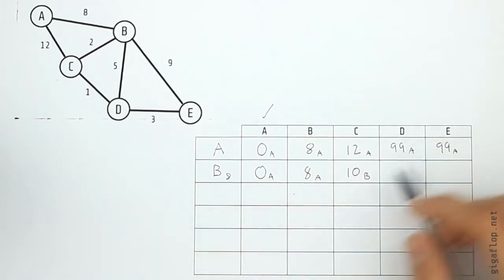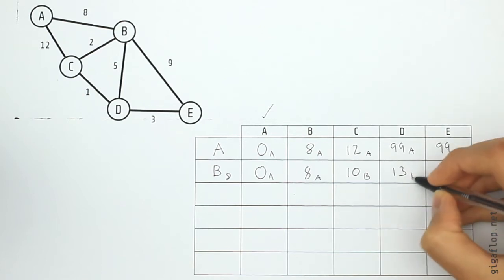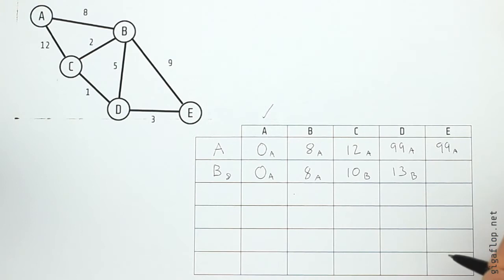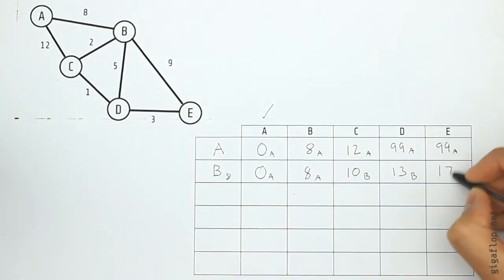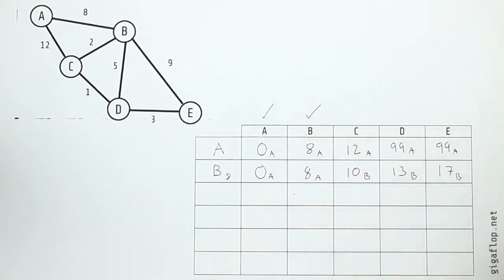B to D are connected with a length of five, so we're going to do eight plus five, that's thirteen, and that came from B. Now B to E, they are connected with an arc of length nine, so we're going to add that to eight to get seventeen, and again that came from B. So we've finished our inspection of B, we can tick it off.